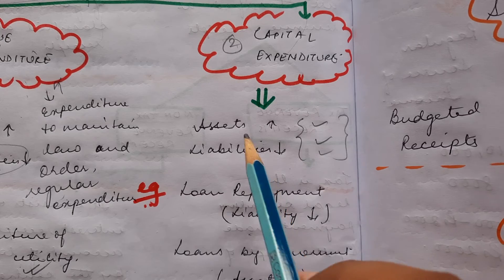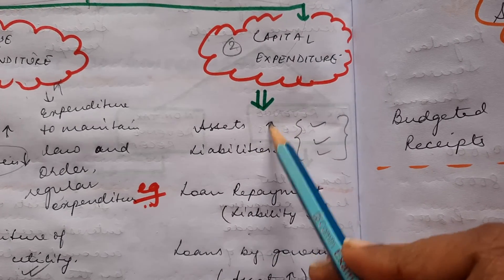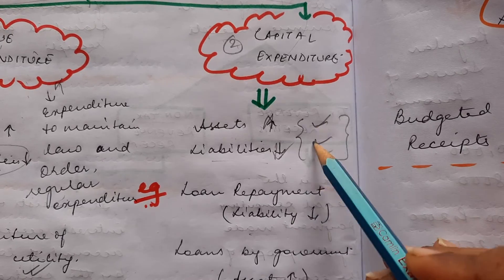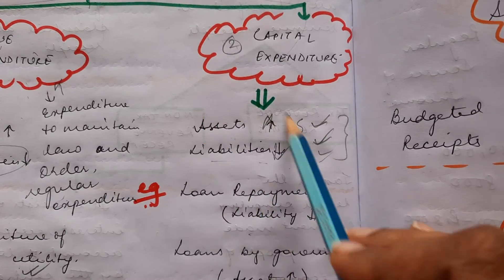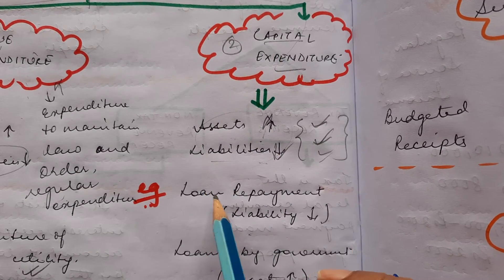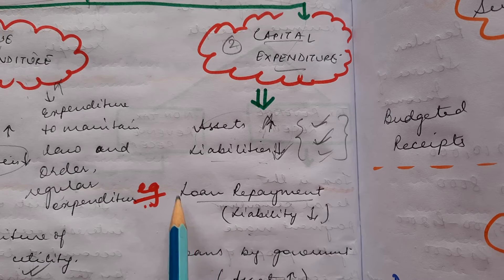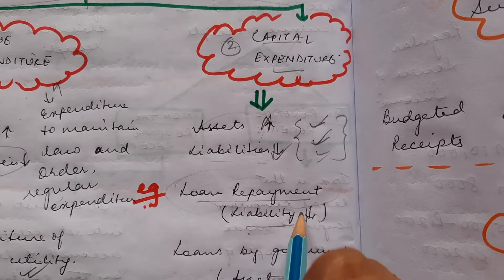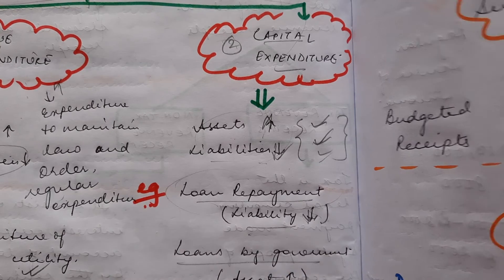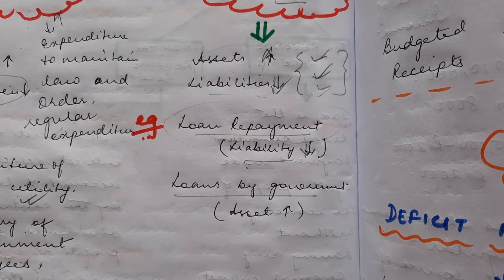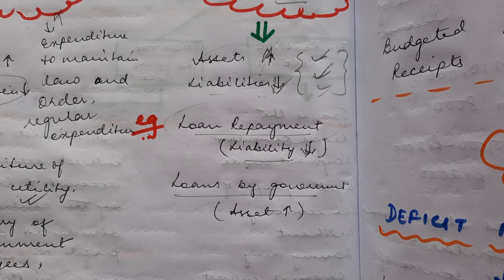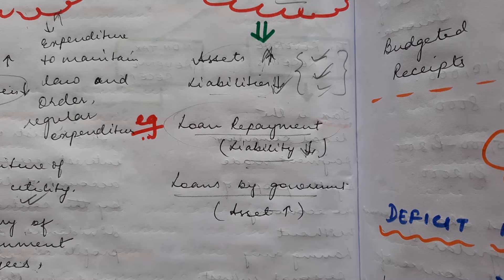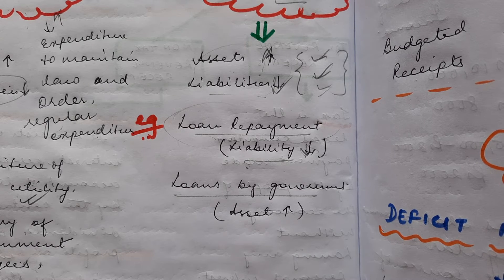Capital expenditures are the ones where there is an increase in assets or a decrease in liabilities. For example, loan repayment — if loan repayment is done, the liabilities decrease. If the government gives loans, that means assets are increased. So whichever expenditure of the government results in either an increase in assets or a decrease in liabilities is called a capital expenditure.